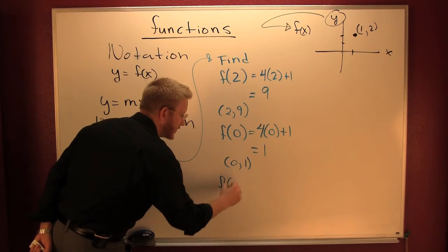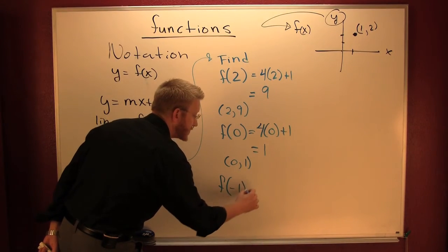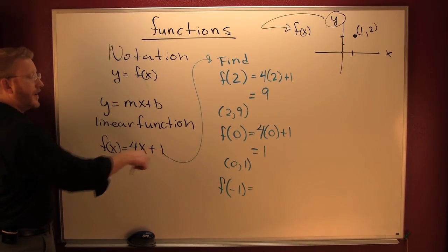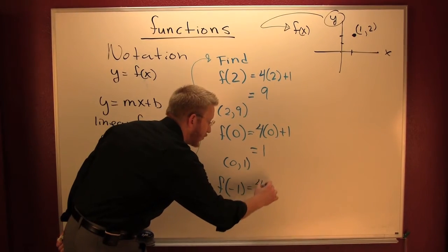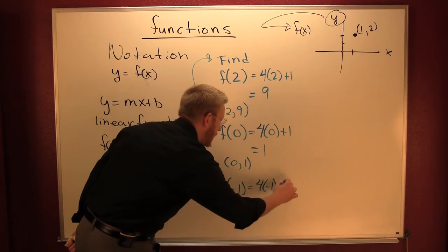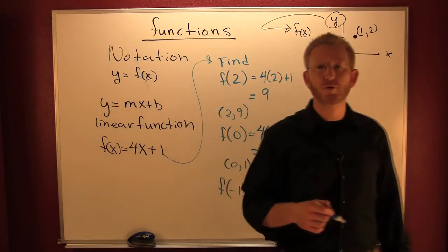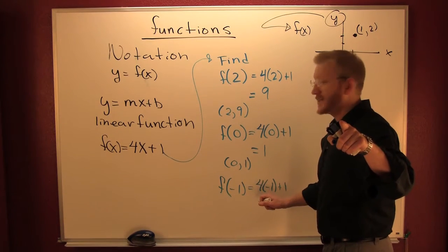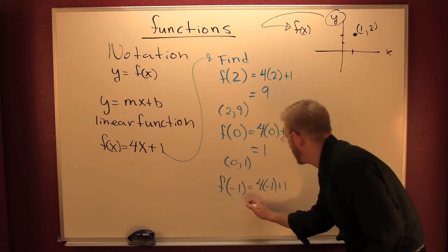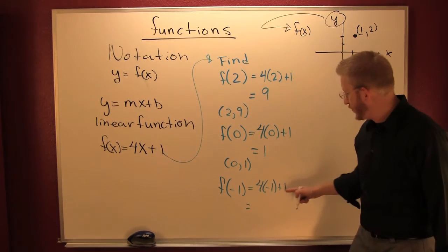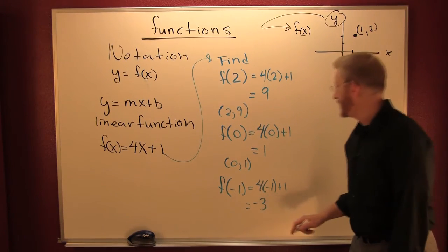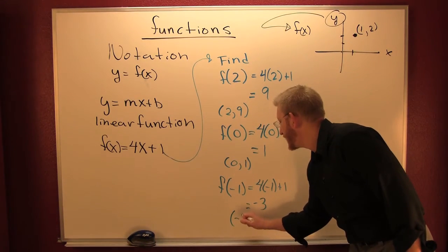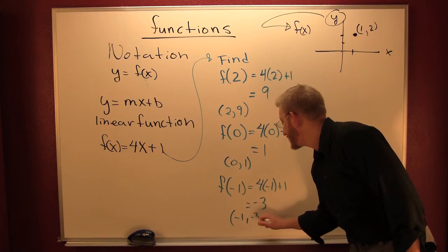F of negative one. That says everywhere I see an X, I put a negative one. This is four times negative one plus one. Negative four plus one is negative three. Now I'm going to put that point right here. My X value is negative one and my Y value is negative three.